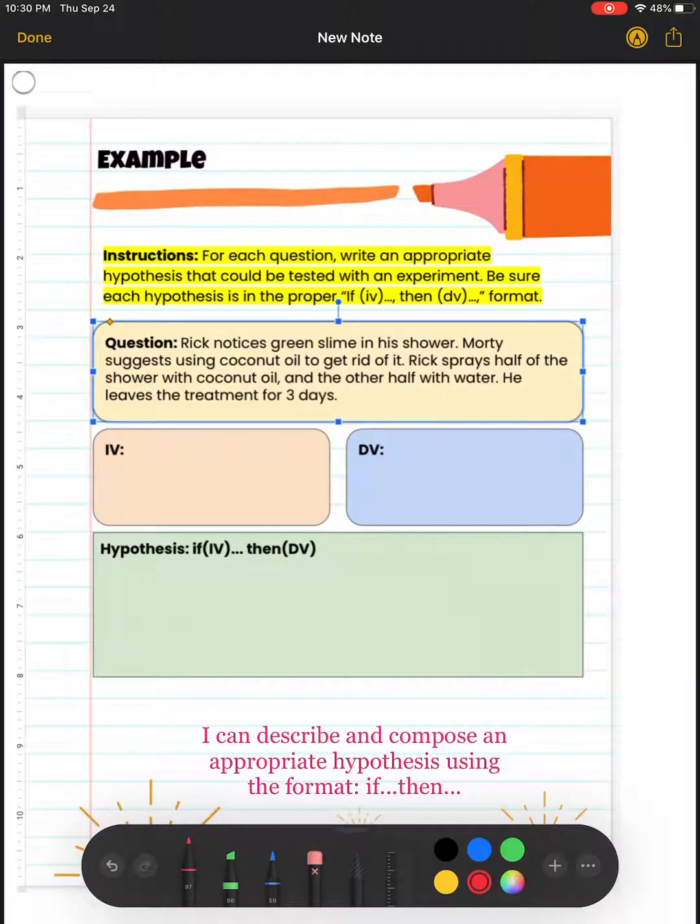First of all, remember that an independent variable is a variable that is basically being changed or manipulated. So in this scenario, what exactly is being changed or manipulated? We can see that Rick is using two different types of treatments, right? Half of the shower is being cleaned with coconut oil and the other half is cleaned with water. So therefore, the type of treatment is our independent variable.